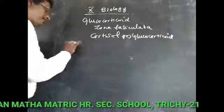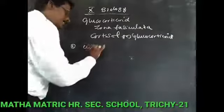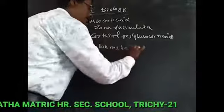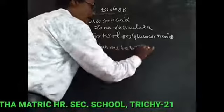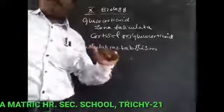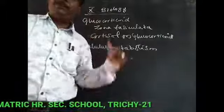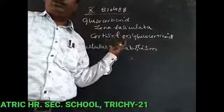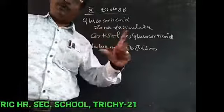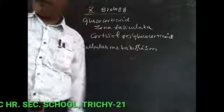What are the functions of the glucocorticoid hormone? The first function is to regulate cellular metabolism — the metabolic activities occurring inside the cell are controlled by glucocorticoid. Metabolism is of two types: one is called anabolism and another one is called catabolism.